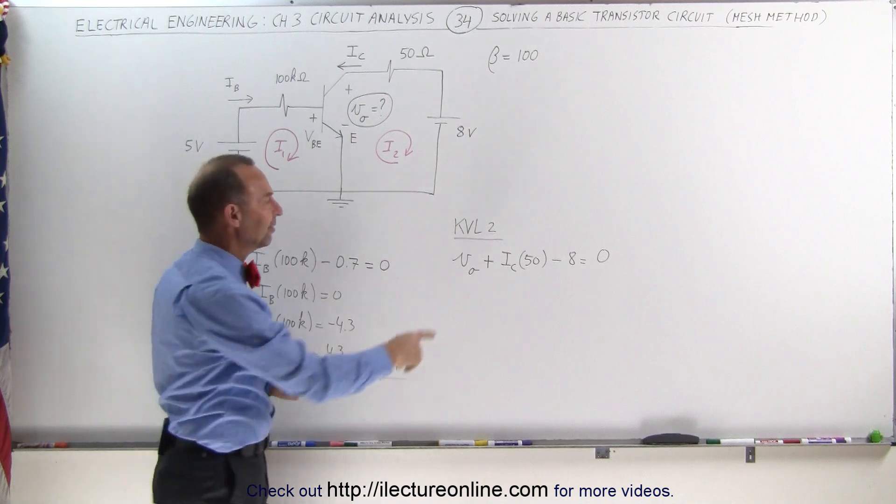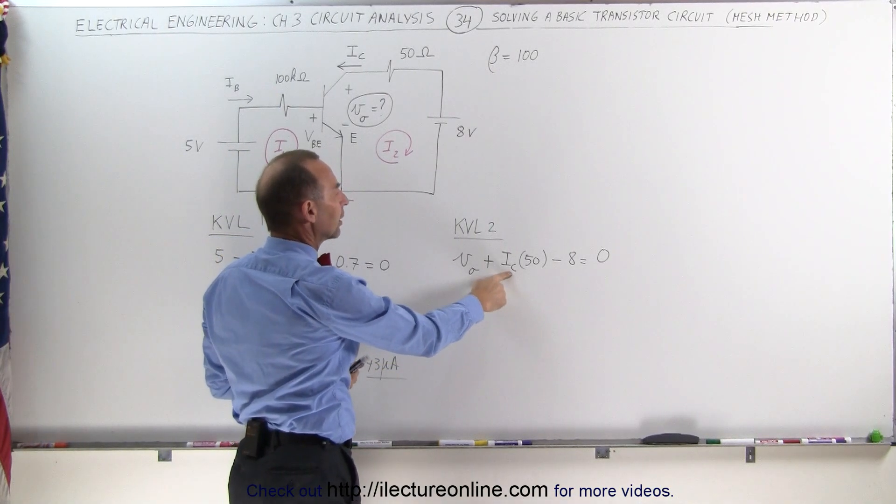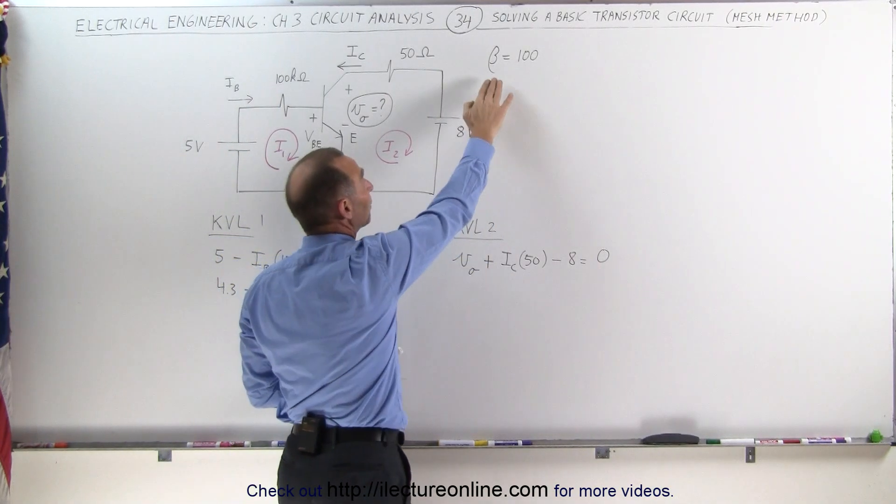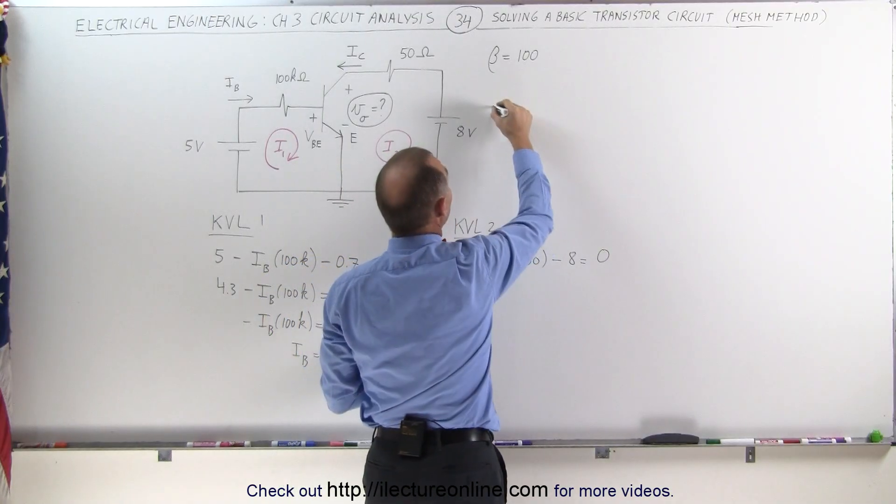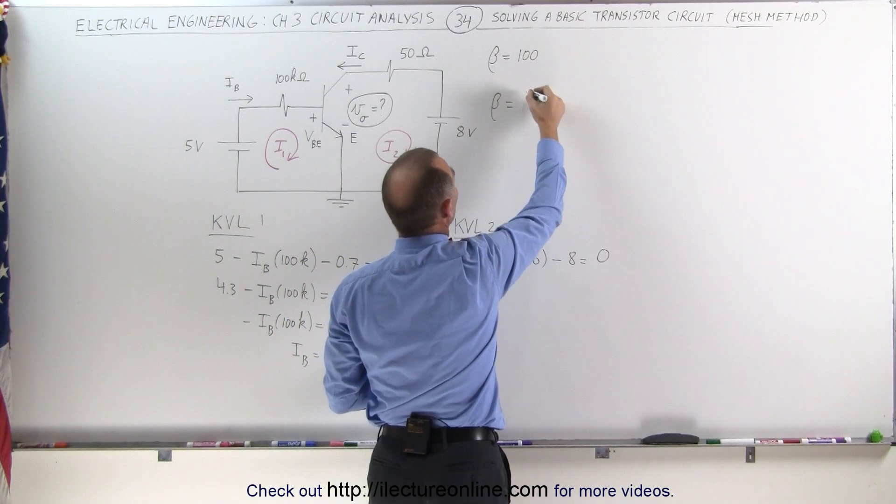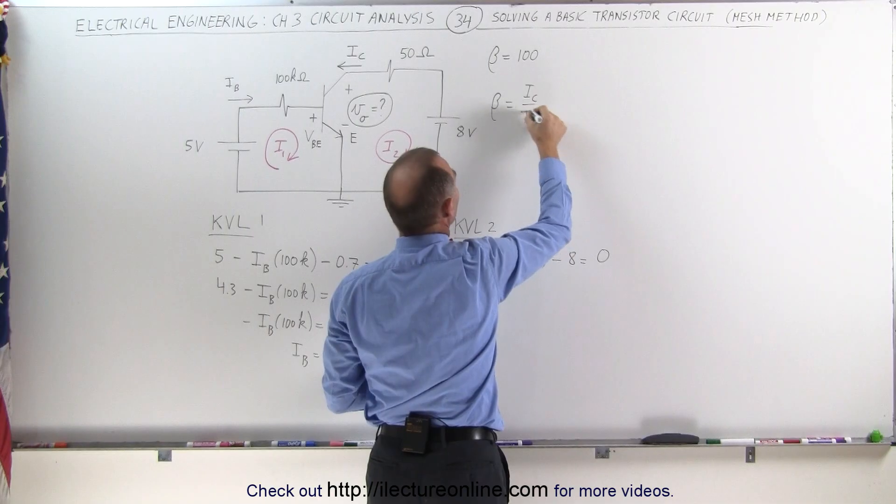Now you say, how can we solve for V sub O if we don't know the collector current? However, we know that beta is equal to 100, and beta is equal to the ratio of the collector current divided by the base current.